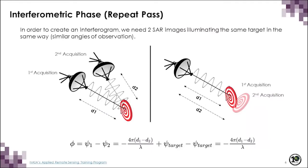To create an interferogram, you need two SAR images that illuminate the same target in the same mode, meaning the observation angles should be similar. Here we have two configurations. On the left is the one usually used to generate digital elevation models with InSAR, while the one on the right is used to generate deformation maps. Interferometric repeat pass is when the satellite observes the same target at two different points in time. In the image on the left, acquisitions 1 and 2 observe the same target from different positions, separated by a baseline.